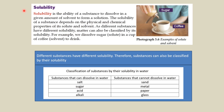For solubility: solubility is the ability of a substance to dissolve in a given amount of solvent to form a solution. The solubility of a substance depends on the physical and chemical properties of its solute and solvent. As different substances have different solubility, matter can also be classified by its solubility. For example, we can classify substances by their solubility in water. Salt, sugar, acid and alkali are soluble in water, whereas sand, metal, paper and glass cannot dissolve in water.